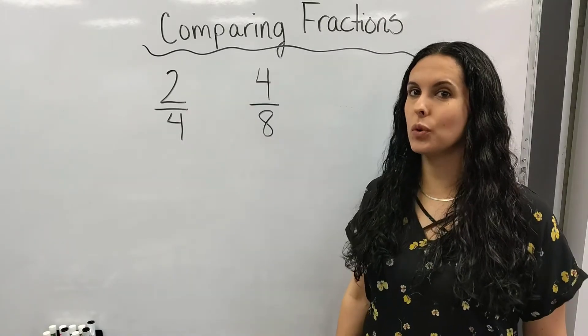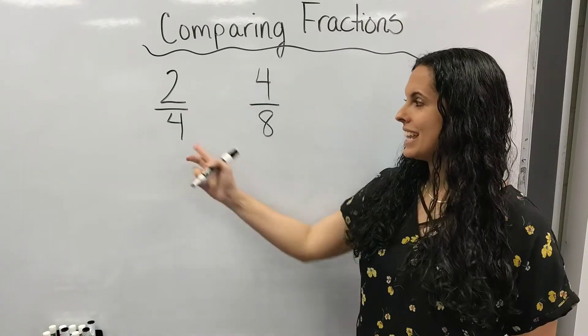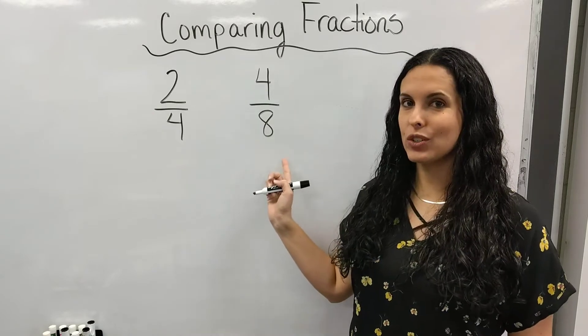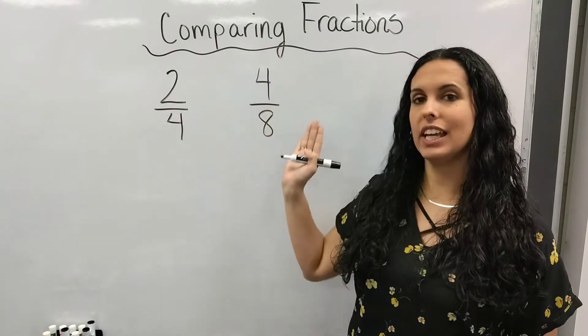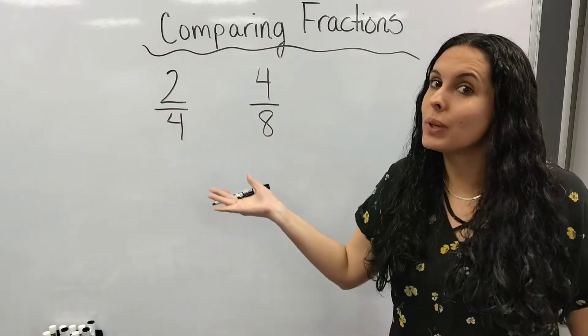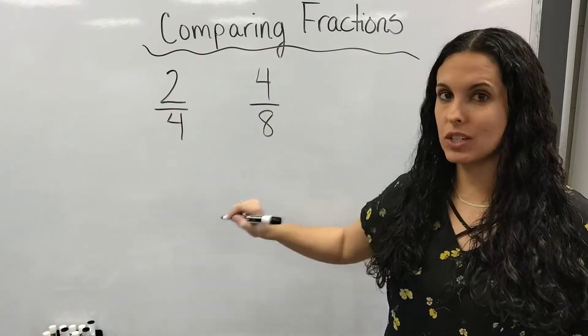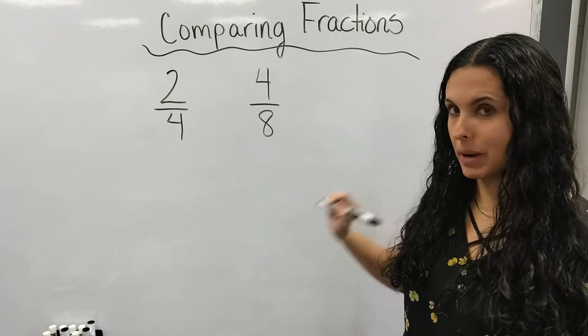Now let's compare two-fourths and four-eighths. This time, my denominators are unlike. That means they are different. Now immediately looking at these numbers, which one's bigger? I'm going to need to make sure that I draw my fraction, my model fractions.